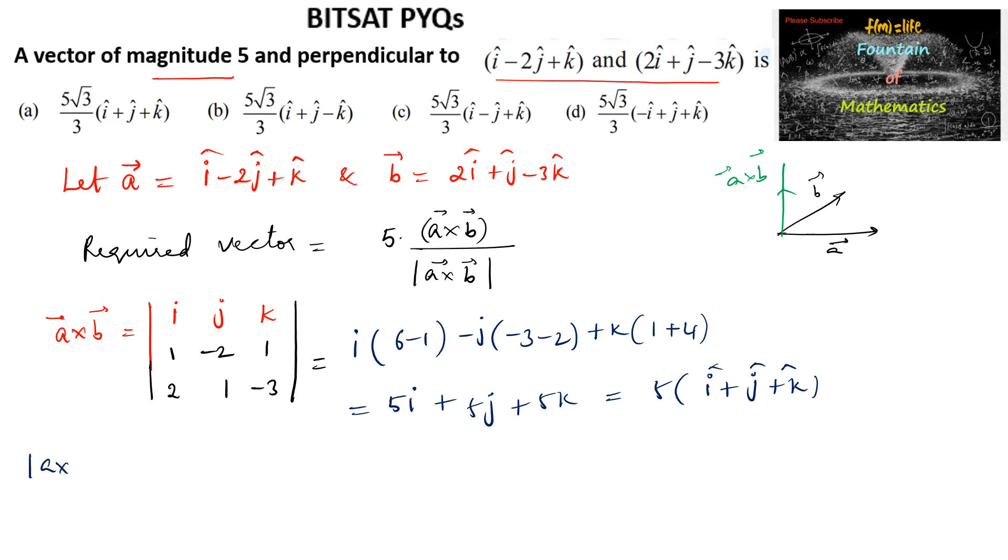And mod of a cross b is equal to 5 times root of 1 square plus 1 square plus 1 square, that is 5 into root 3.